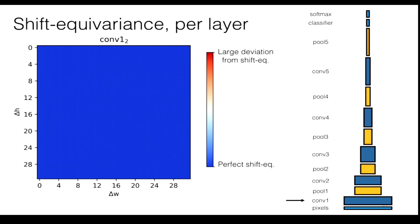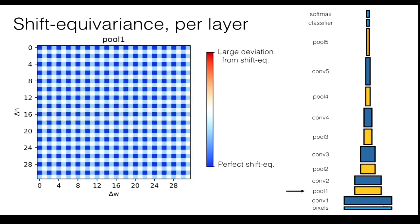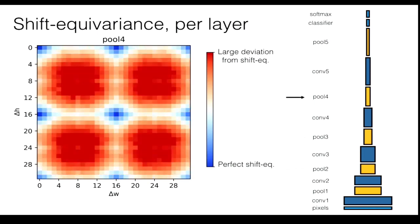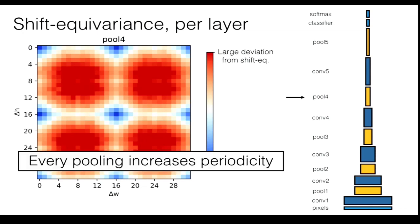But if we go to the first pooling layer, we see a strange stippling pattern. For even pixel shifts we get the same representation, but for odd pixel shifts we get a different one. Practically this means: you're taking a picture, you pan the camera by one pixel and your pool-1 representation is now different; move it two pixels and it's the same again. As we go through the network through each pooling layer, this pattern persists and the stippling increases by a factor of two every time — getting worse and worse. Every pooling layer is increasing the periodicity.